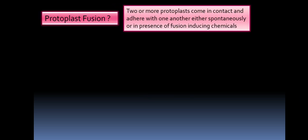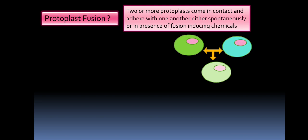Then what is protoplast fusion? Two or more protoplasts come in contact and adhere with one another, either spontaneously or in presence of fusion inducing chemicals. That means two protoplasts are coming together, fusing or adhering. This is called protoplast fusion. This is a very important phenomenon in plant biotechnology, commonly used to create new plant varieties. You can see here in the diagram.